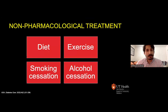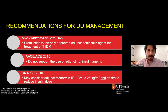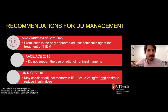Now let's shift to treatment strategies for double diabetes. Like type 1 and type 2, there is an emphasis on lifestyle modifications to improve insulin resistance: diet with a significant decrease in carbohydrates and saturated/trans fat intake, increasing regular exercise, and smoking and alcohol cessation. For pharmacologic treatment, the 2022 ADA Standards of Care supports the amylin mimetic pramlintide as the only adjunctive therapy to insulin in type 1 patients. The AACE/ACE 2015 guidelines don't support any adjunctive therapy to insulin.